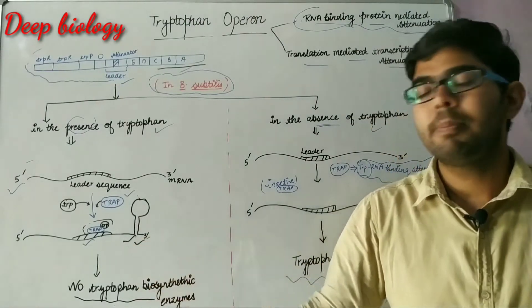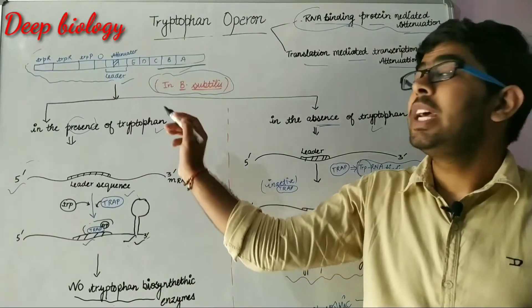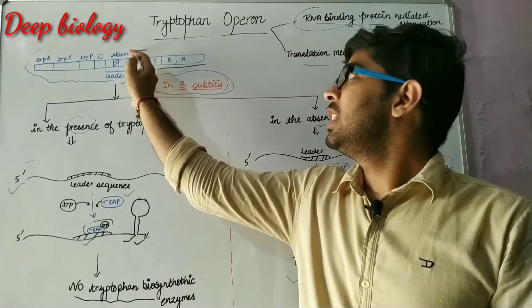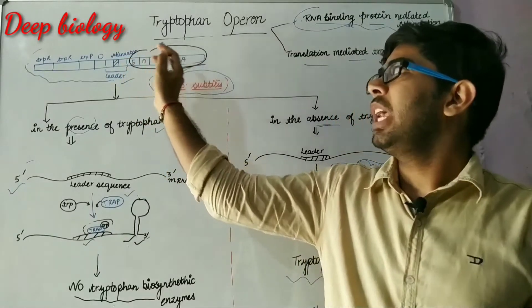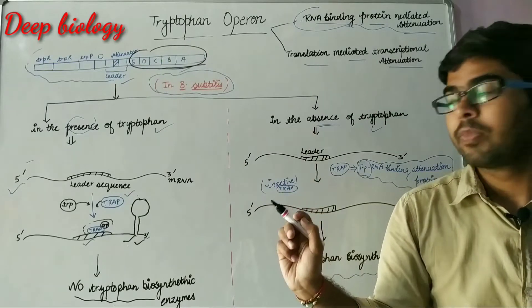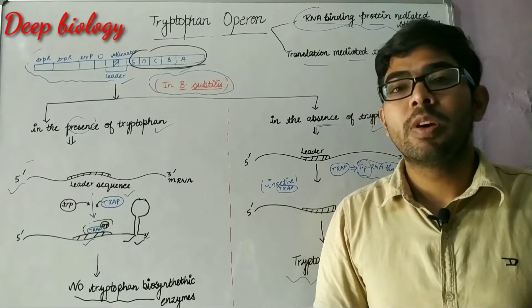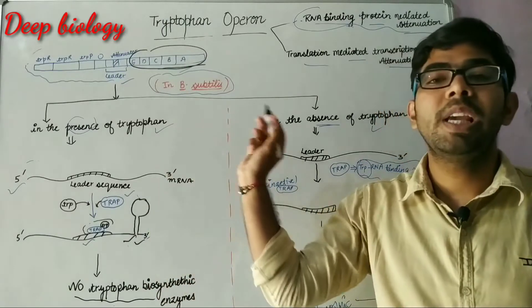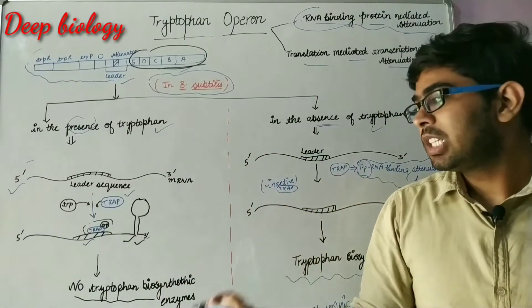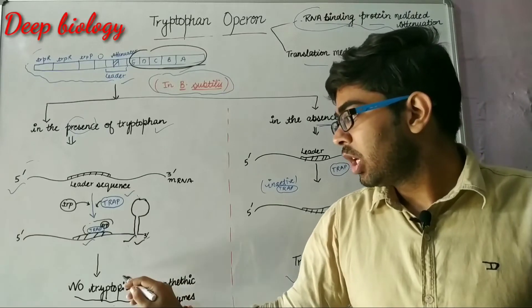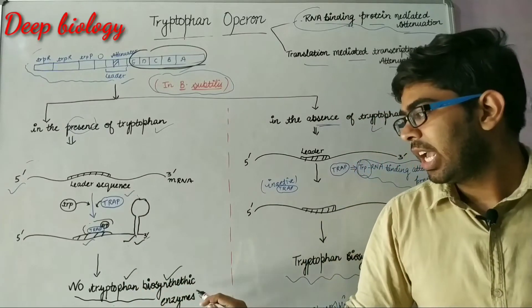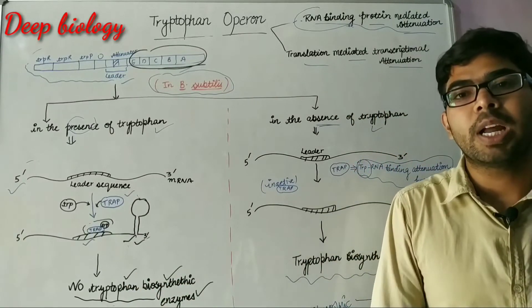That's why the mRNA sequence of EDCBA structural gene is not found, and there will be no synthesis of EDCBA enzyme that leads to no tryptophan biosynthetic enzymes in the cytoplasm.